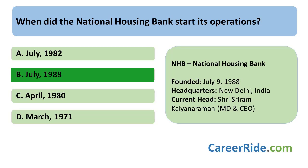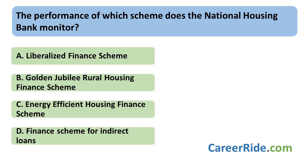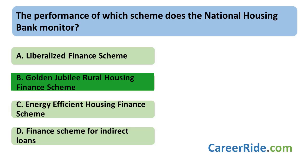The NHB registers, regulates, and supervises all housing finance companies and keeps surveillance — on-site and off-site — and coordinates with other regulators in India. The NHB monitors the performance of the Golden Jubilee Rural Housing Finance Scheme, implemented to Scheduled Banks, HGFC, and other cooperative sector institutions. Another important scheme formulated by the NHB is the EEHS — Energy Efficient Housing Scheme — launched in 2011 for lending towards energy efficient housing units or buildings. The total disbursement made under this scheme was Rs. 81.36 crore at that time.